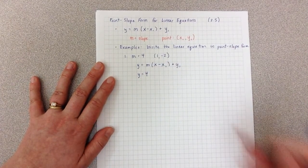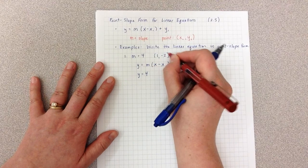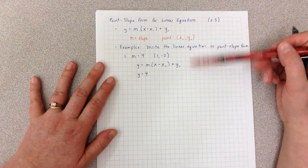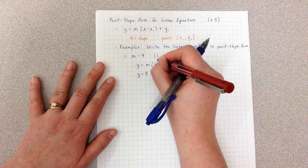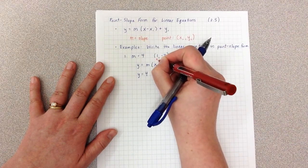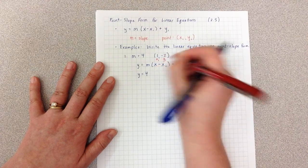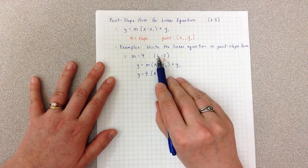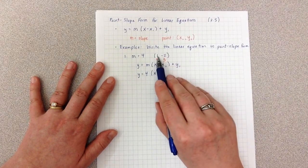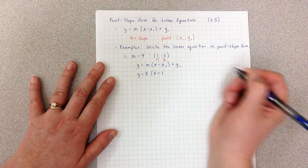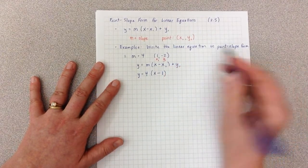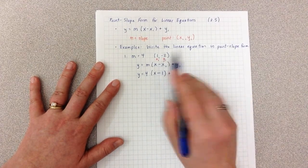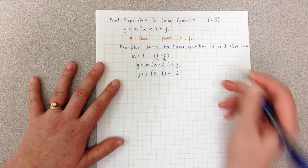And then I want to remind myself that this point here is an x and a y. And in terms of the work we're doing with point-slope form, we actually talk about this as being x1 and y1. So now I say x minus whatever this value is. In this case, the value is a positive 1, so minus 1. And then I close my parentheses, and then I have plus whatever my y1 value is. And in this case, that's negative 2.